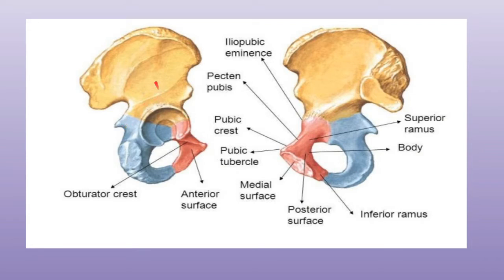The superior part is actually formed by the ilium, the anteroinferior part is formed by the pubis, and this posteroinferior part is formed by the ischium. The ischium also forms the adjoining two-fifth portion of the acetabulum, and forms the posterior boundary of the obturator foramen as well.